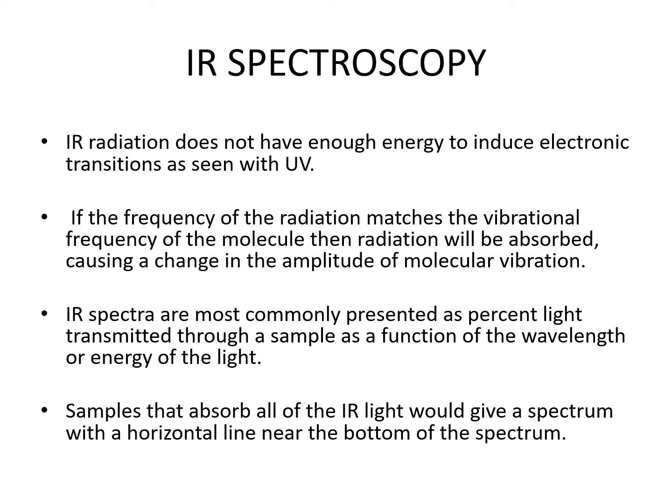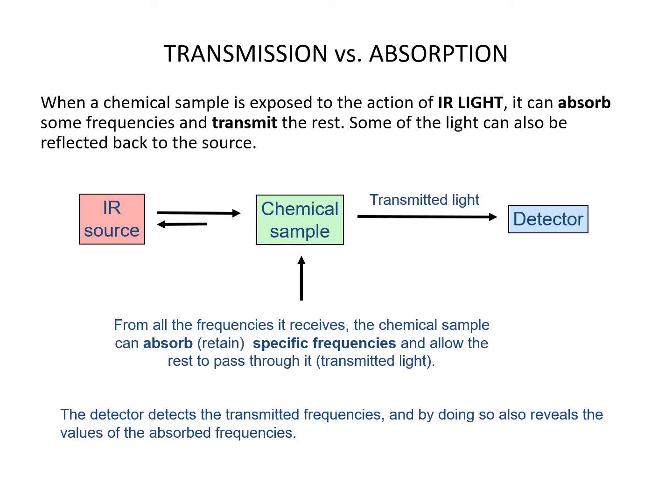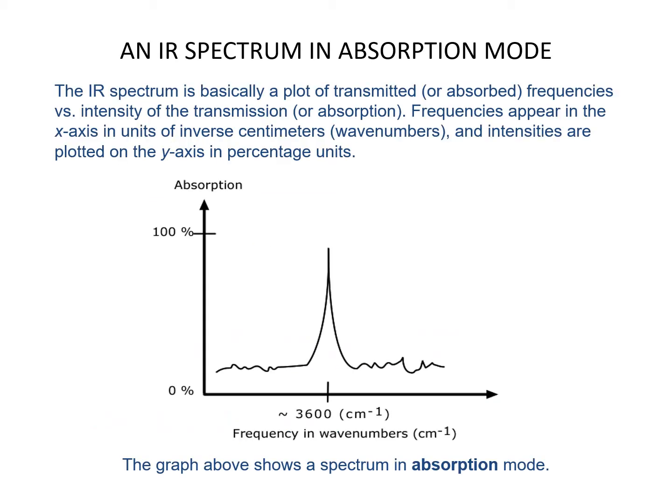IR spectra are most commonly presented as percent light transmitted through a sample as a function of the wavelength or energy of the light. Samples that absorb all of the IR light would give a spectrum with a horizontal line near the bottom of the spectrum. When a chemical sample is exposed to IR light, it can absorb some frequencies and transmit the rest. Some of the light can also be reflected back to the source. From all the frequencies it receives, the chemical sample can absorb specific frequencies and allow the rest to pass through. The detector detects the transmitted frequencies and by doing so reveals the values of the absorbed frequencies.